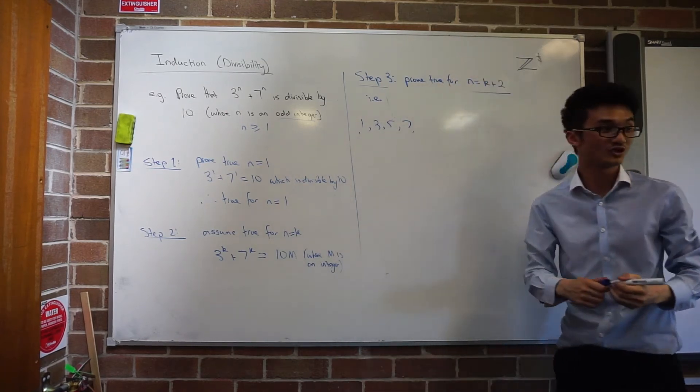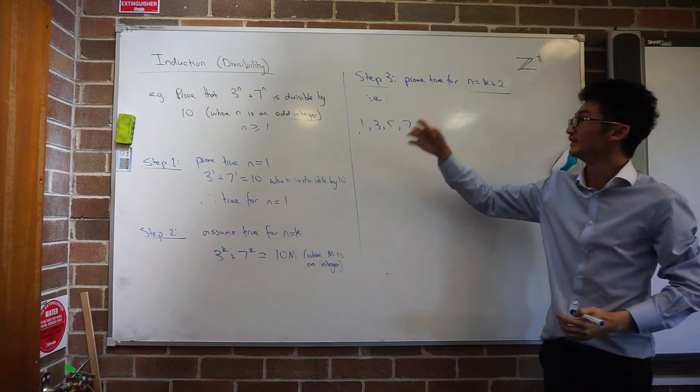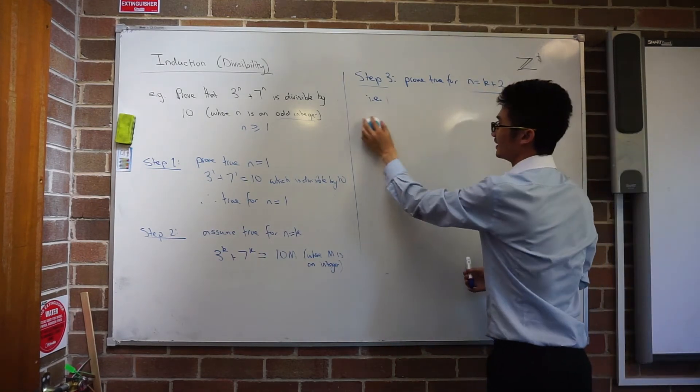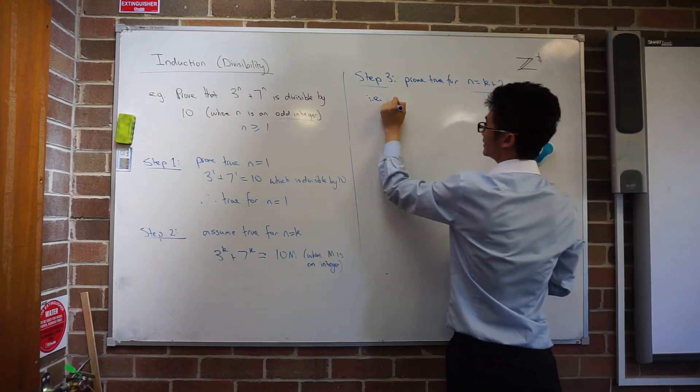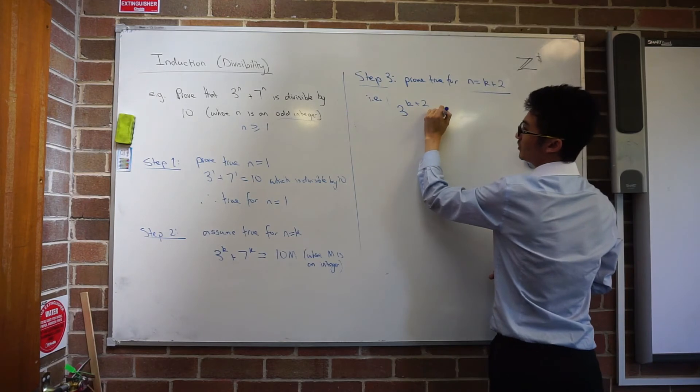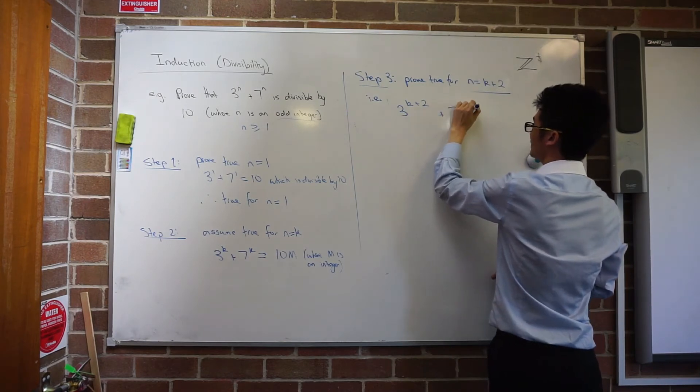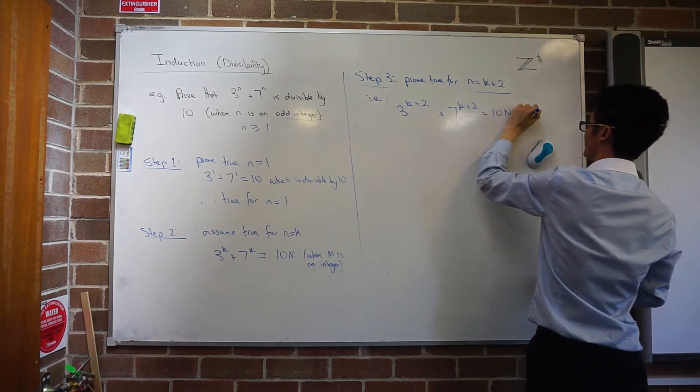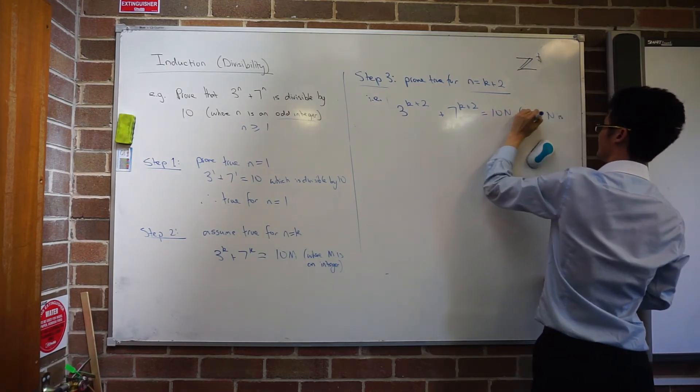And so really what I'm trying to do is 3 to the k plus 2 plus 7 to the k plus 2 is equal to 10n, where n is an integer.